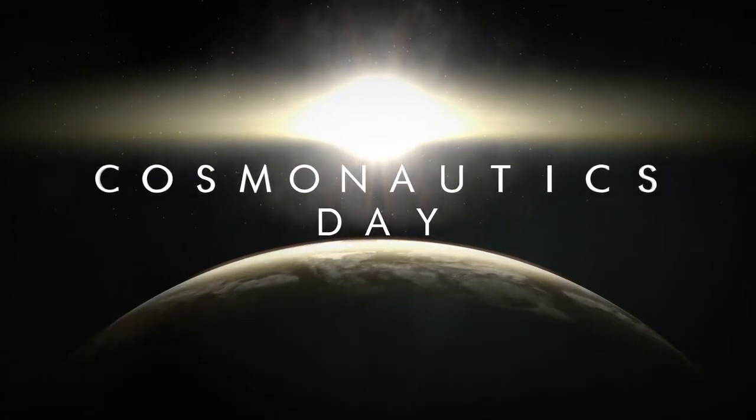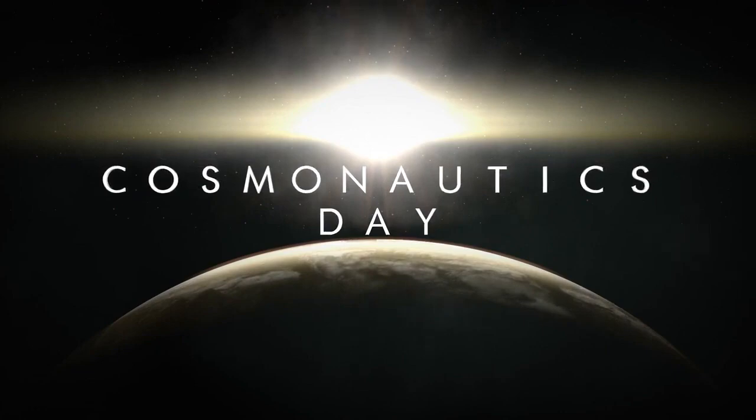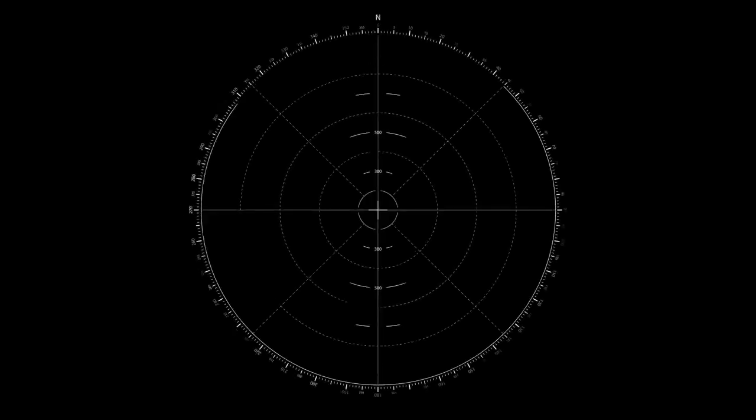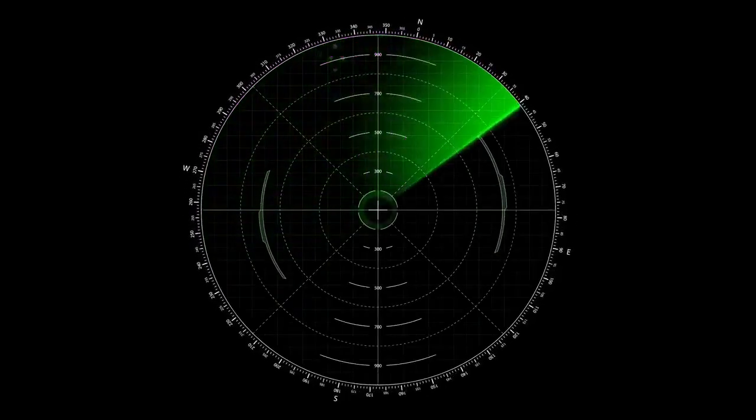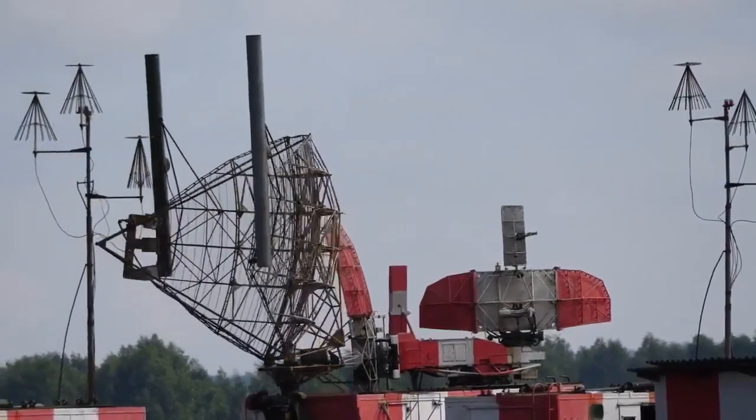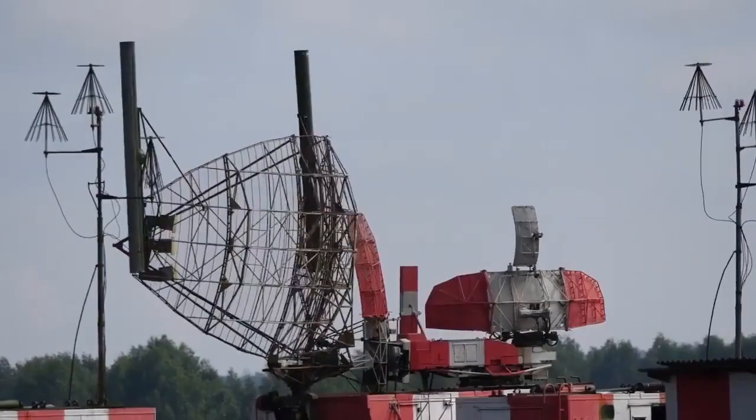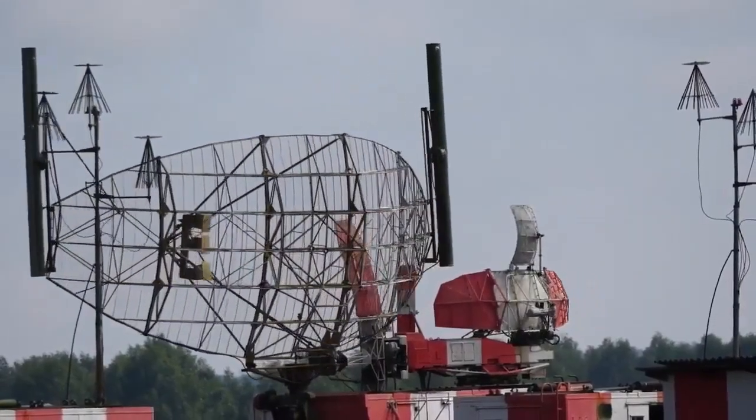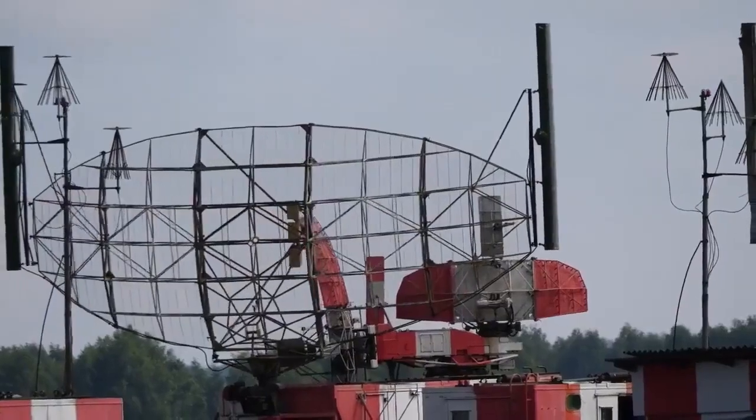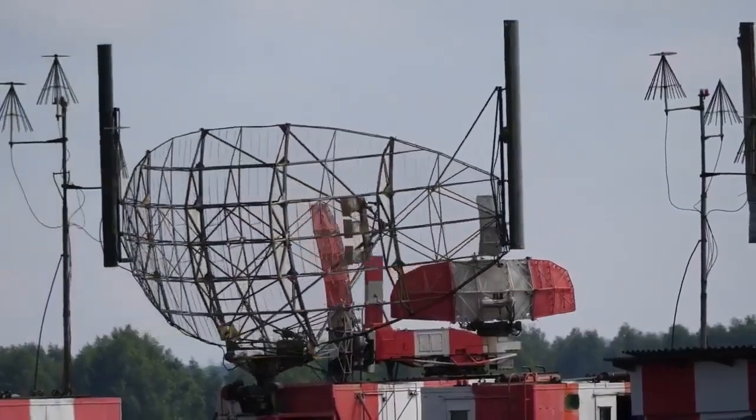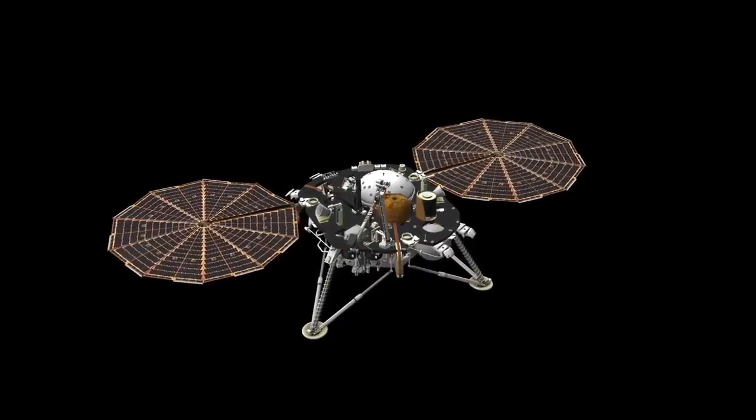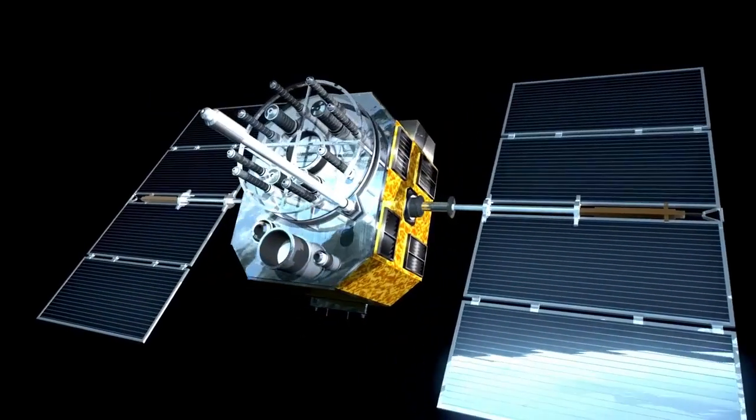Voyager 1's revival of a 43-year-old transmitter is another stunning display of engineering foresight. NASA's Voyager 1 spacecraft recently communicated using a backup radio transmitter that had been dormant since 1981. This milestone highlights the ingenuity and resilience of the spacecraft, which is now over 15 billion miles from Earth, making it humanity's most distant emissary.